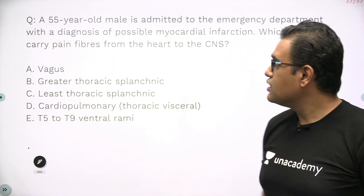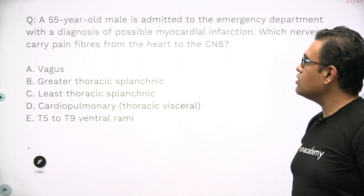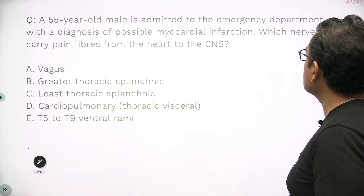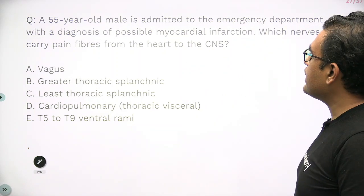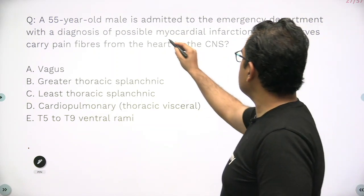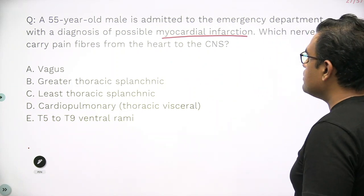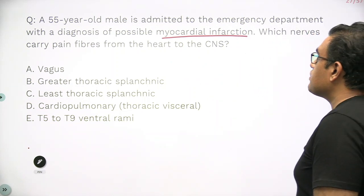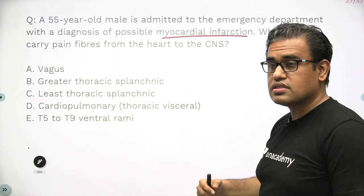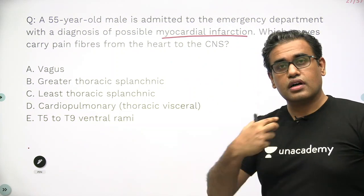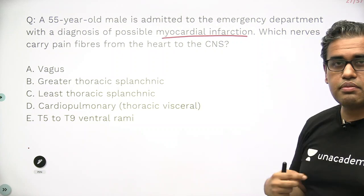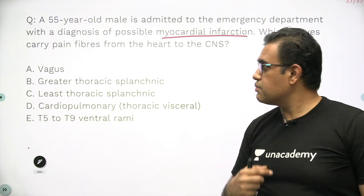The question says that a 55-year-old male is admitted to the emergency with a diagnosis of a possible MI — myocardial infarction. Which nerve carries pain fibers from the heart to the CNS? Heart attack or MI — but which nerve is carrying the pain?